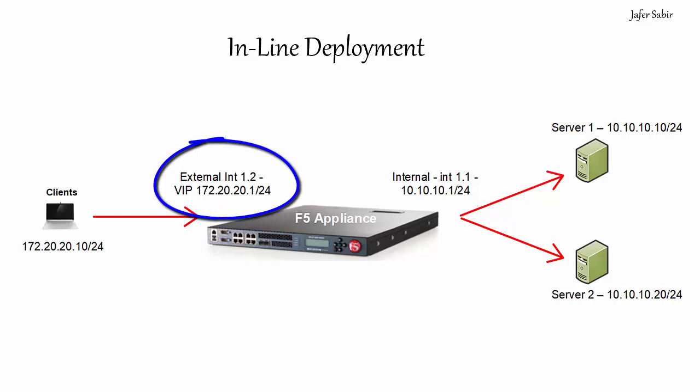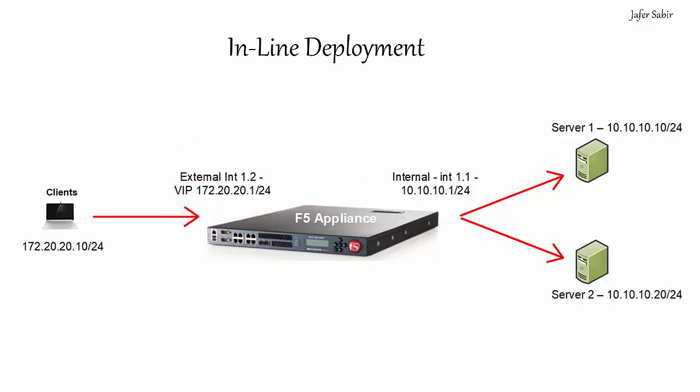With inline deployment, traffic comes in on one interface and leaves the F5 on another interface, and the interfaces are part of different subnets, VLANs, and possibly even switches. This is why it's called inline — the F5 is inline of the traffic, so you have to go through the F5 to get to the other side. From the left-hand side, we have a client connecting to a virtual IP address configured on the virtual server on the outside interface, which is 172.20.20.1.